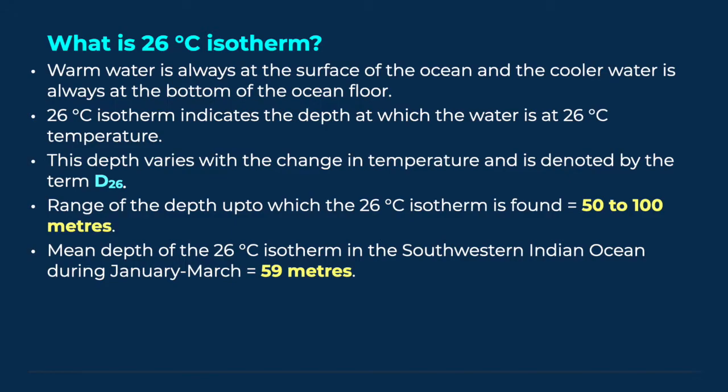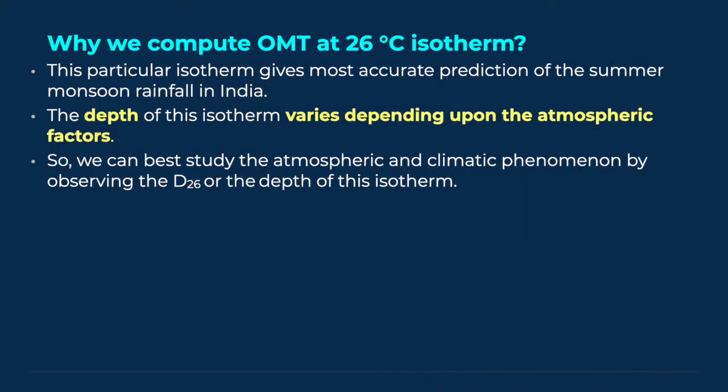The mean depth in the southwestern Indian Ocean during January-March is 59 meters. Why is OMT computed at 26 degrees, and not at 20 or 30 degrees? Because this particular isotherm gives the most accurate prediction of summer monsoon rainfall in India. The depth of this isotherm varies depending upon atmospheric factors, so we can best study atmospheric and climatic phenomena by observing D26.